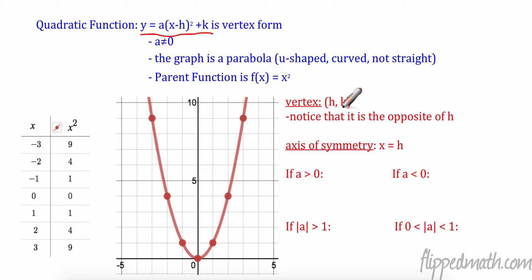All right, so let's summarize that. So we notice a few things. First of all, our vertex, we notice that the opposite of H is our X value, right? So if I had X minus 2 squared plus 7, my vertex would be the opposite of that, or positive 2 and 7. We know that when A is greater than 0, A is greater than 0 means it's positive, it's going to open up, right? Which means it'll have a minimum value. When A is less than 0, it's going to do what? Open down, and it'll have a maximum value, right? Very cool.